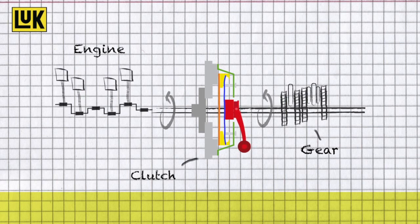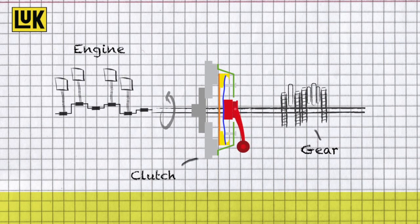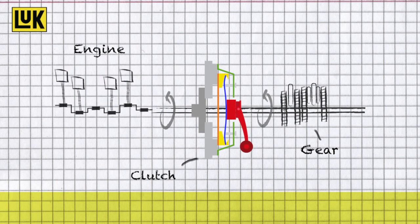An engaged clutch interrupts the power to the transmission, while with a disengaged clutch the power transfer occurs.